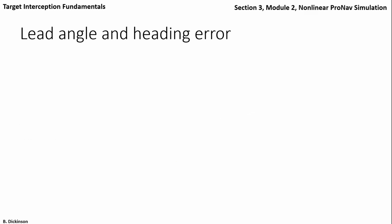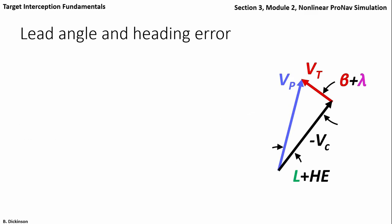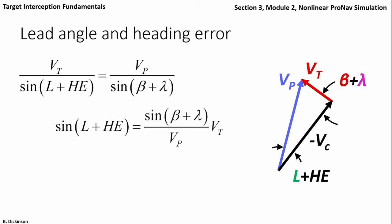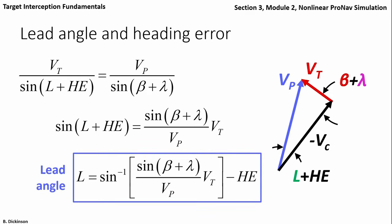Finally, we need to relate lead angle and heading error. Connecting the velocity vectors from the original engagement diagram, we see the angles of a triangle for lead angle, heading error, target heading angle, and line-of-sight angle. The law of sines allows us to relate those angles and then solve for lead angle. Lead angle is a function of beta, lambda, velocity ratio, and heading error. Compare this expression to the collision triangle expression developed in Section 1, Module 2.